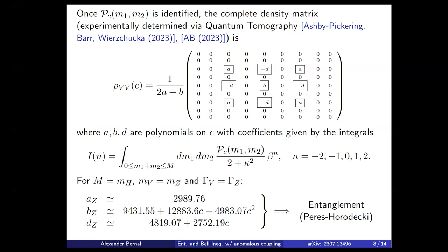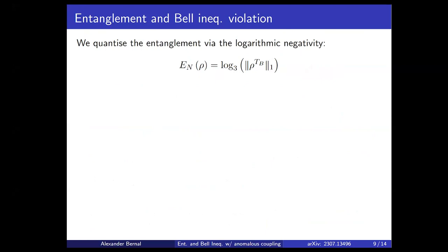In the worst-case scenario where a equals zero — which could occur in other theories — the relevant term is d, a linear function of c. The only way for the matrix to be separable is if d is exactly zero, which only happens when c is fine-tuned to cancel the two terms. So in the general picture, the density matrix associated with two vector bosons from a spin-zero particle is always entangled.